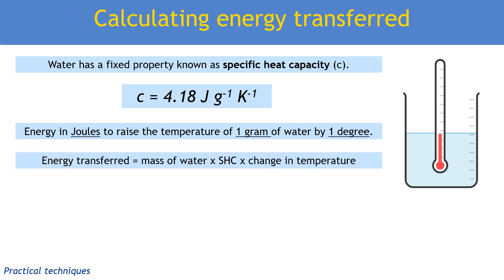You can then put them into the equation: energy transferred equals the mass of water times the specific heat capacity times the change in temperature. In some cases we may not have pure water but a solution of acid, alkali, or metal salt. We'll still make the assumption that the specific heat capacity is around the same. There are a few other things we can do to make using this equation easier.